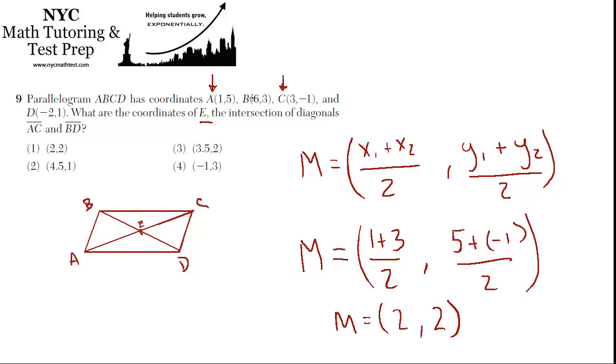And like I said, if you really want to check, you can also average B and D, and you'll find that, again, the midpoint is 2, 2. 1 is the answer.